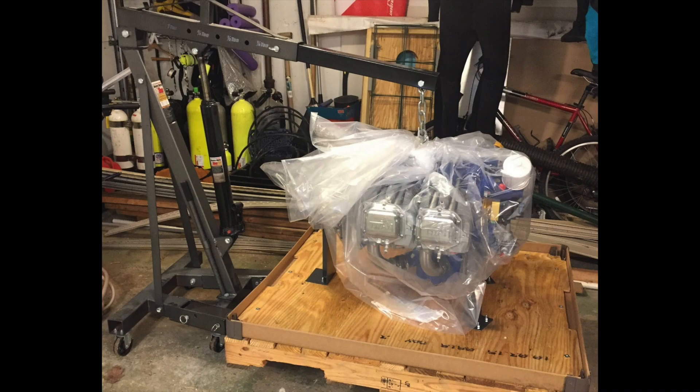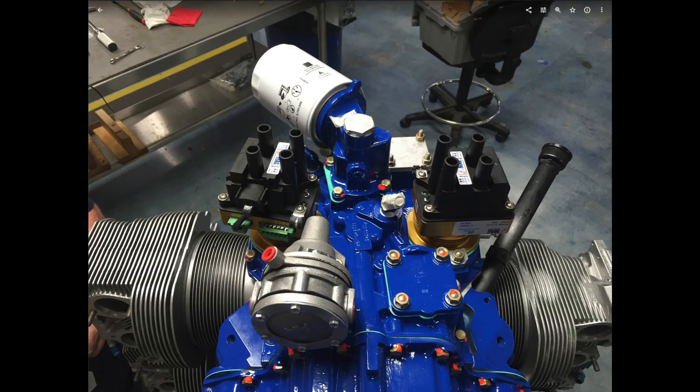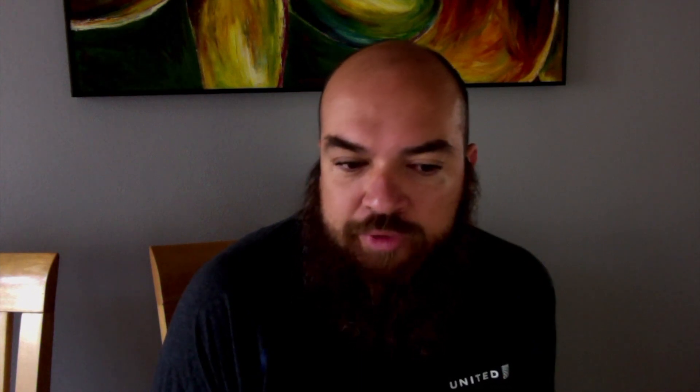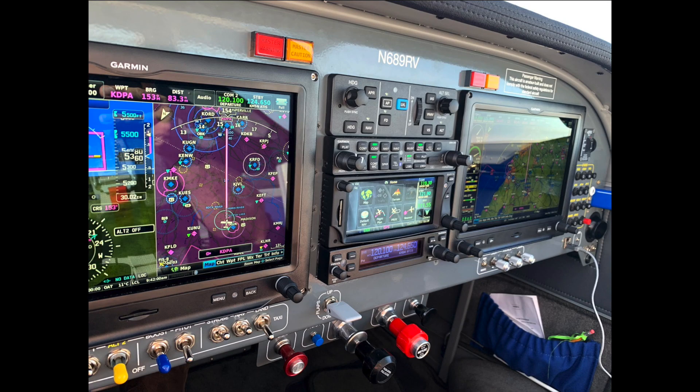So as some of you may know, the PMAGs are an electronic magneto system and they take power off of the magneto gears on the back of the engine, so they have an internal generator. So they don't need, different from other electronic ignition systems, they don't need external backup power. They do still need ship's power for startup and for idle operations when there's not quite enough speed on the gears to keep them going. But in flight they transition automatically to their internal generator so that they're not actually needing ship's power.